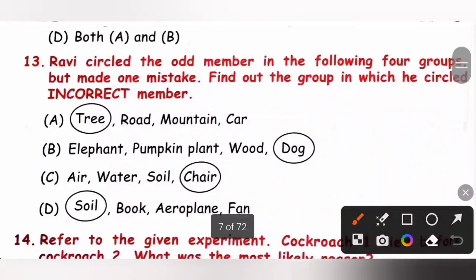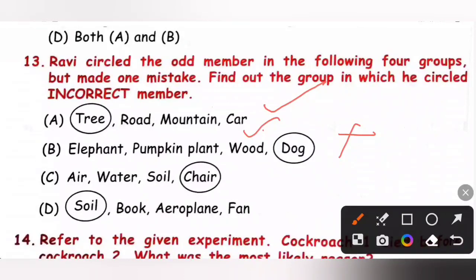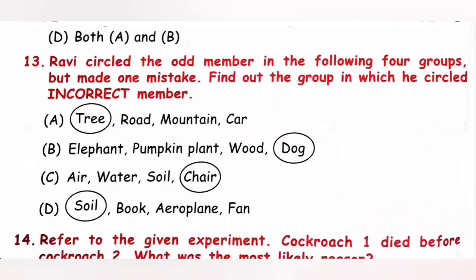Question 13: Ravi circled the odd member in four groups but made one mistake. Option A: Tree, road, mountain, car — road, mountain and car are non-living, tree is living, so tree was correctly circled. Option B: Elephant, pumpkin, plant, wood, dog — wood is non-living, but dog was circled; he should have circled wood, so this is the incorrect circle. Option C: Air, water, soil, chair — chair is man-made non-living, correctly circled. Option D: Soil, book, aeroplane, fan — soil is natural non-living, the rest are man-made non-living, correctly circled. Option B is the correct answer.